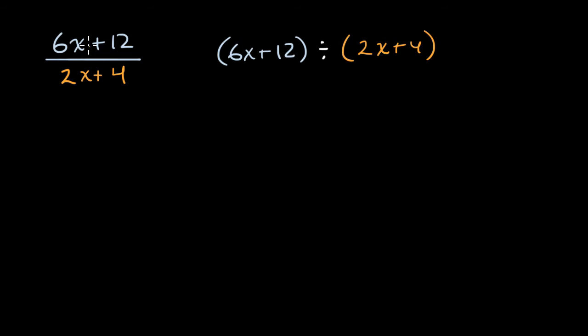And when you divide something by something else and we get a question mark over here, another way to think about it is: what can I multiply by 2x plus four to get to 6x plus 12? So 6x plus 12 is going to be equal to this question mark times (2x + 4).